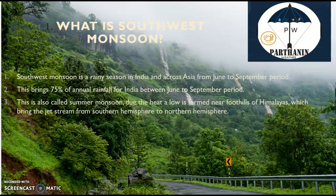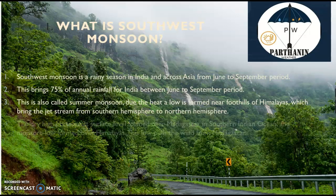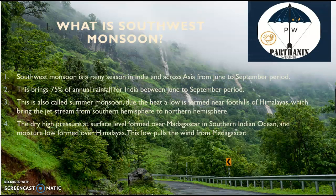This is also called summer monsoon due to heat low. It is formed near the foothills of the Himalayas — not exactly at the Himalayas, but north and central India where there will be a heat low. This brings the jet stream wind pattern from the southern hemisphere to the northern hemisphere. There is a dry high pressure area over Madagascar in the south Indian Ocean, and a moisture low over the Himalayas.